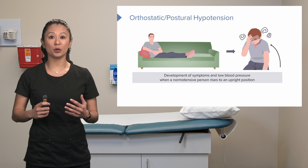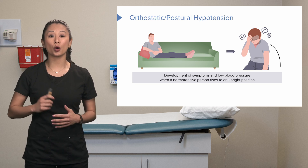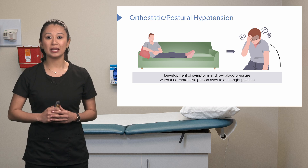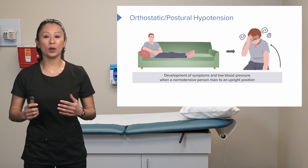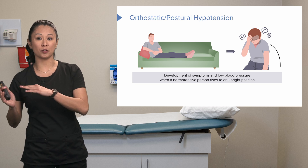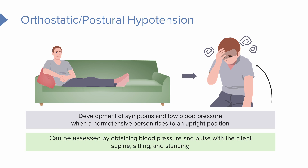Another important type is orthostatic or postural hypotension. This is when a normotensive person develops symptoms with a very low blood pressure when going from laying down to sitting up. We can assess this by obtaining a blood pressure and pulse when the client is supine, then sitting, then standing — a very common method to assess for orthostatic hypotension.